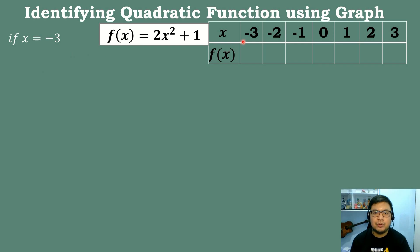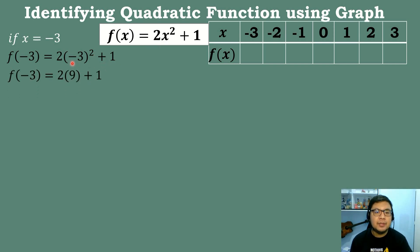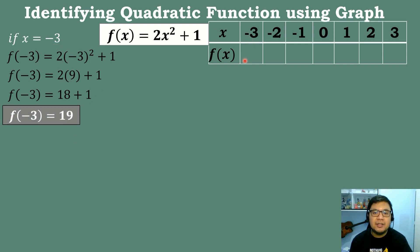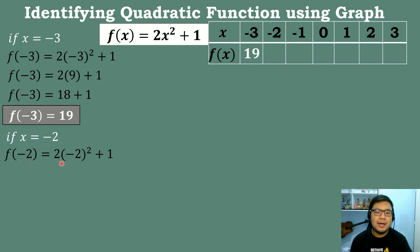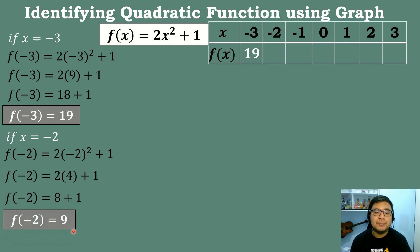Substituting x = −3: f(−3) = 2 × (−3)² + 1. Negative 3 to the second power is positive 9. 9 × 2 = 18. 18 + 1 = 19. So if x = −3, the value of f(x) = 19. For x = −2: 2 × (−2)² + 1. Negative 2 times negative 2 equals positive 4. 4 × 2 = 8. 8 + 1 = 9. So f(x) = 9.